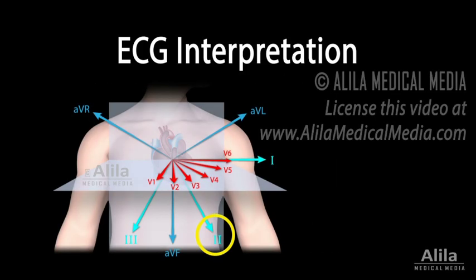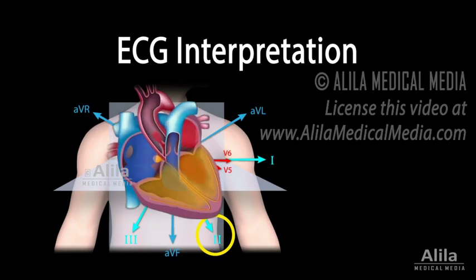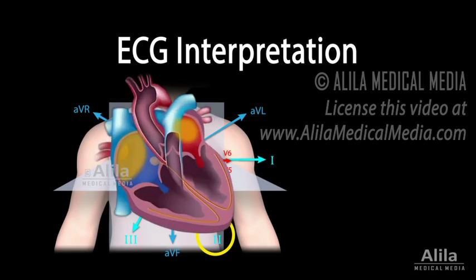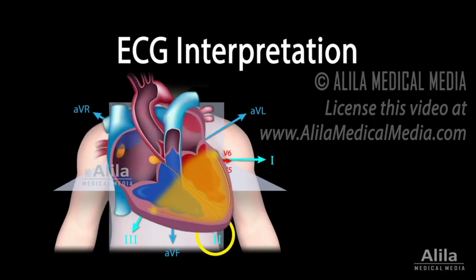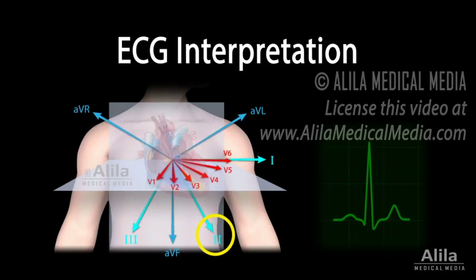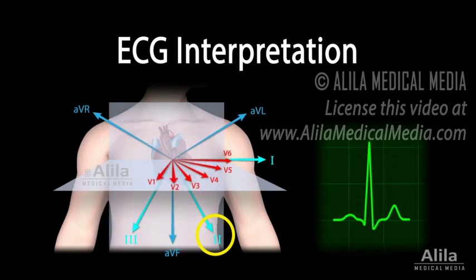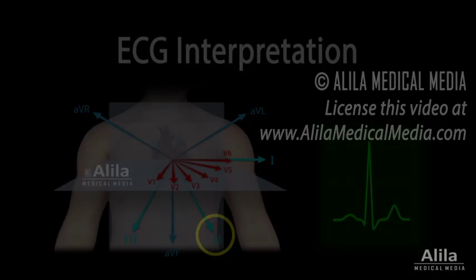Among the 12 leads of the ECG, Lead 2 is most popular. This is because the net movement of the heart's impulses is toward Lead 2, making it the best general view. Unless otherwise specified, we will be looking at Lead 2.